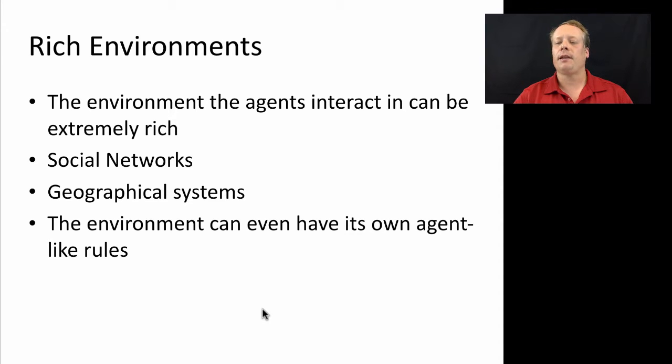Within agent-based modeling, the environment that the agent's interacting can be extremely rich. Two examples are social networks and geographical systems. With social networks, we can describe all the ways that an agent might interact with another agent via a set of networks and links that connect that agent to those other agents.